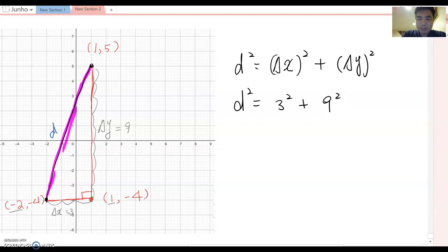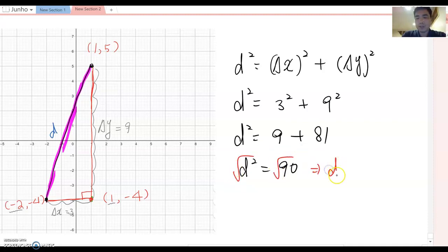So this becomes d² = 9 + 81. So if you calculate that, d² = 90. So final step, we take the square root so that we can find d value here. Then d = √90.